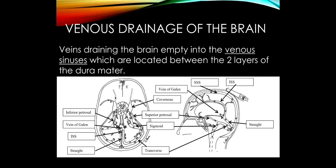Looking at this cross section, we won't see the superior or inferior sagittal sinuses since they've been cut off. But here we see the confluence of sinuses where the superior sagittal sinus joins with the straight sinus. We can also see where the inferior sagittal sinus and the great vein of Galen join the straight sinus, and we can appreciate how the transverse sinuses wrap out laterally.